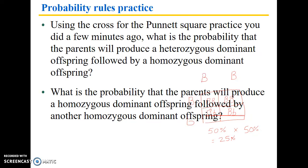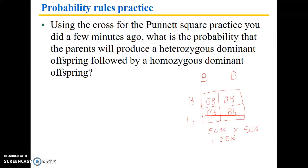What's the probability that the parents will produce a homozygous dominant offspring followed by another homozygous dominant? This is not a very exciting example, but as long as you understand the principles of where this math is coming from, you can work through more creative examples. Homozygous dominant is 50%, times another 50%, so there's a 25% chance.